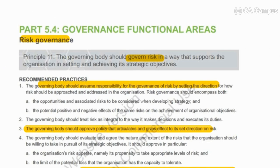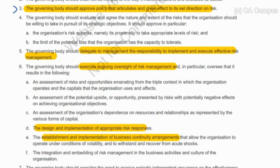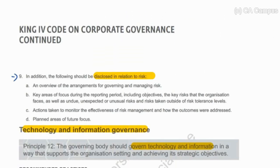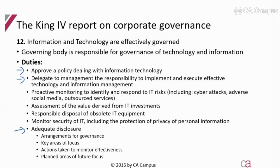Looking at risk governance, the board is responsible and must approve the policy. Delegation will be to management. They will generally exercise oversight as the board and then make sure that there is the necessary disclosure. For IT governance, there are some specifics added. They must monitor and identify information technology risks, assess the value derived from investments in IT, responsibly dispose of IT equipment if it's obsolete, and monitor security and private information of employees, suppliers, and customers. Other than that, have a policy delegated to management and have adequate disclosure.